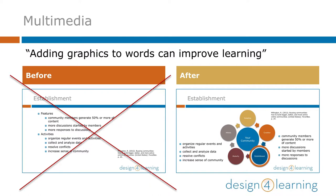Screens upon screens of text aren't very engaging for learners. Adding visuals that support what's in the text can help keep learners' attention. The science behind this is that the printed text and the visual each work separately to be processed into long-term memory, so that learning is increased.